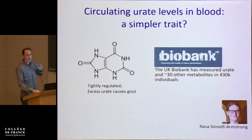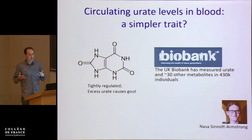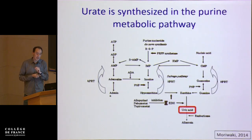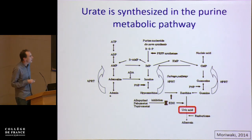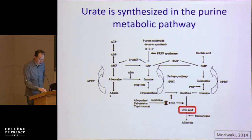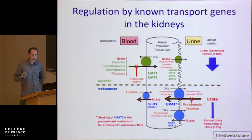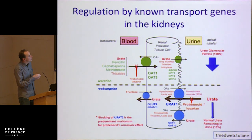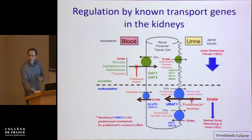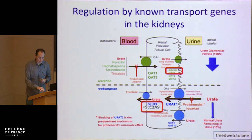We focused on urate levels because there's a lot known about its biology a priori, in sharp contrast to schizophrenia. We know a lot about its synthesis in the purine metabolic pathway, and the regulation of urate levels is controlled by a set of known transport genes in the kidneys — transporters moving urate in and out of blood and urine to tightly control levels. As a spoiler, the top two hits in the genome are two of the major transporters.